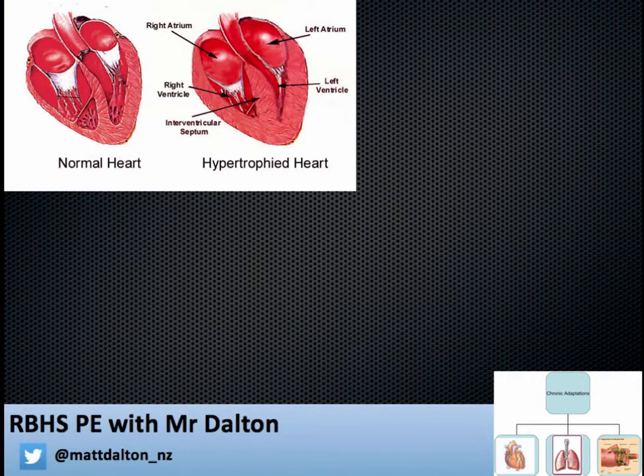Firstly, the cardiac muscle surrounding the heart hypertrophies, which means it grows. This results in thicker, stronger walls surrounding the heart. As a result, stroke volume increases, and therefore cardiac output increases, meaning more blood can be pumped around the body per minute — and this means oxygen can be delivered to the working muscles faster.